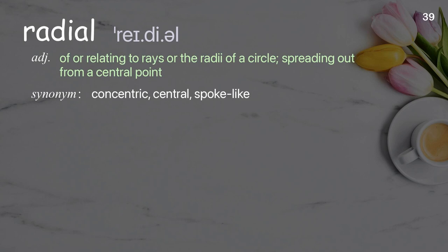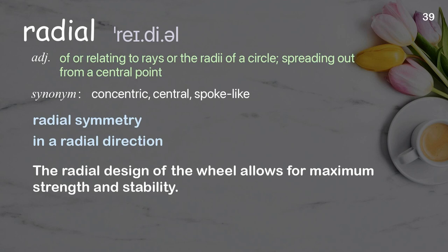Radial: of or relating to rays or the radii of a circle; spreading out from a central point. Examples: radial symmetry, in a radial direction. The radial design of the wheel allows for maximum strength and stability.